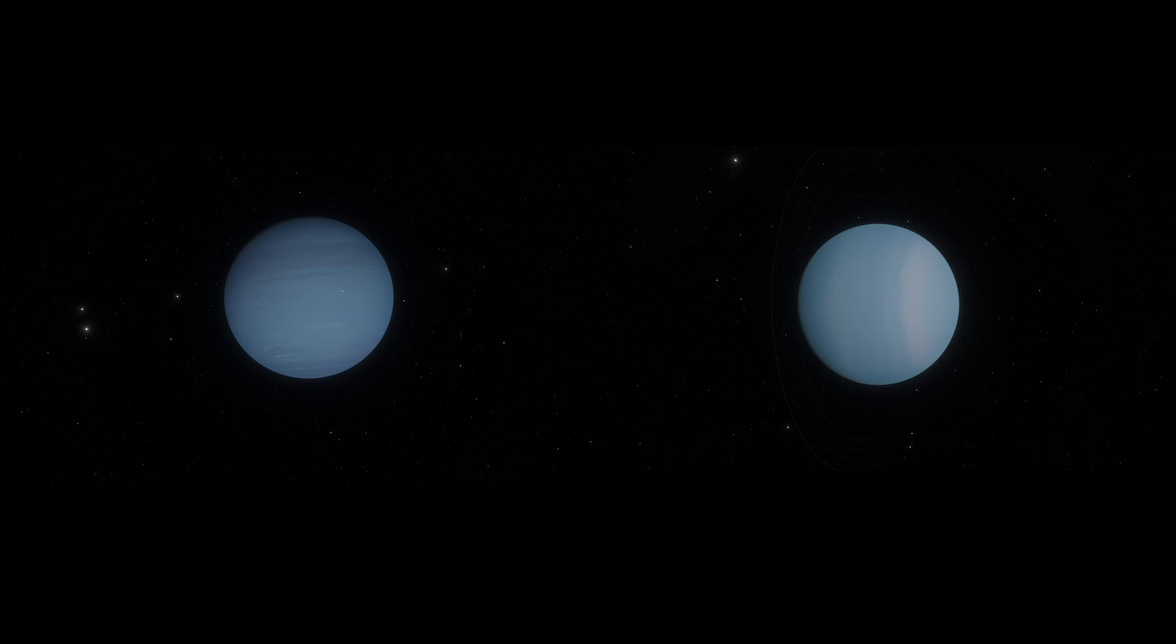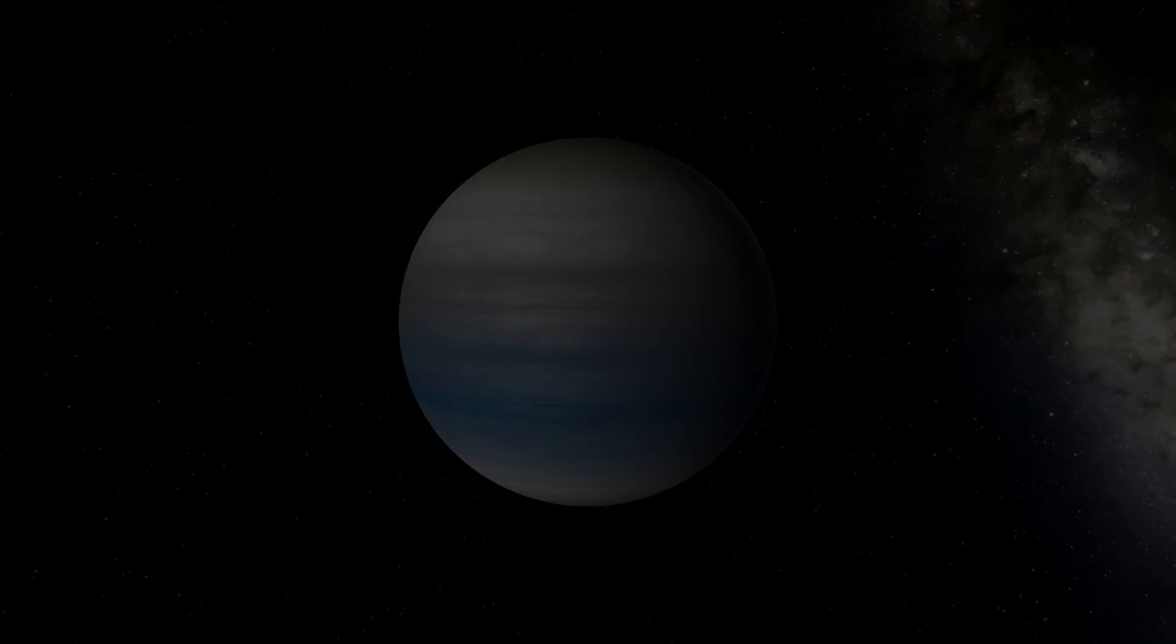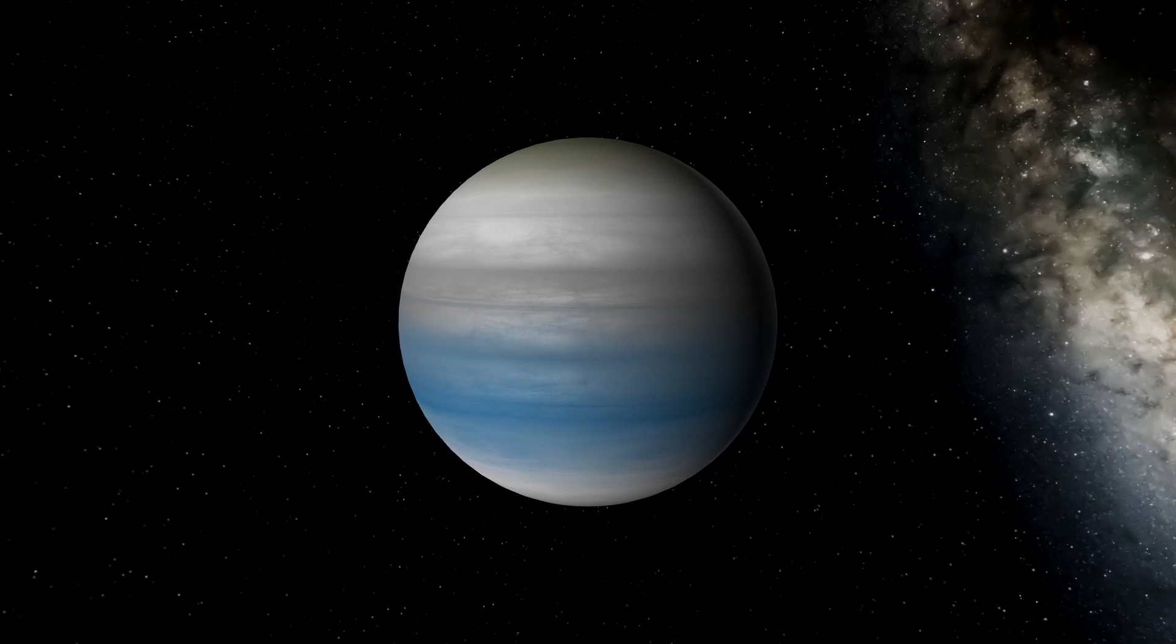The next planets to form were Neptune and Uranus. During this time, Neptune formed closer to the Sun than Uranus had, which explains why it's more massive. Both of their orbits were closer than they are today. Between the orbits of Saturn and Neptune, there was another planet. A fifth giant planet had also formed, likely a mini-Neptune with approximately 10 Earth masses. This all occurred within roughly 5 to 10 million years after the Sun's formation.